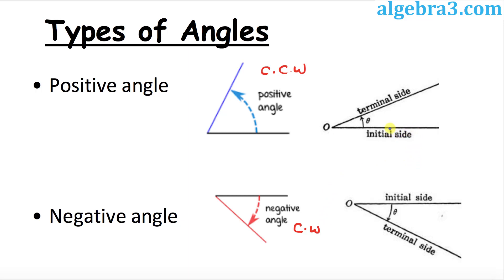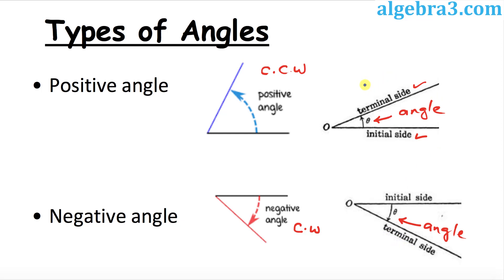When you start making an angle, where you begin is called the initial side, and wherever you stop is called the terminal side. The angle theta is measured between these two sides. So the initial side is where you start, and the terminal side is where you stop. Keep this in mind — it will really help you when you go into trigonometry.